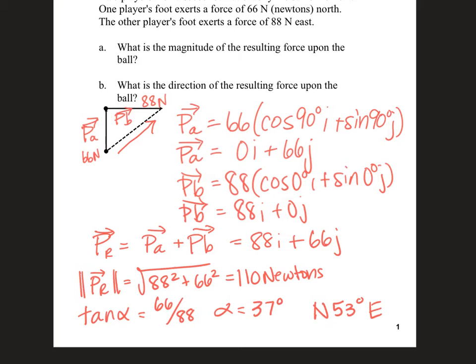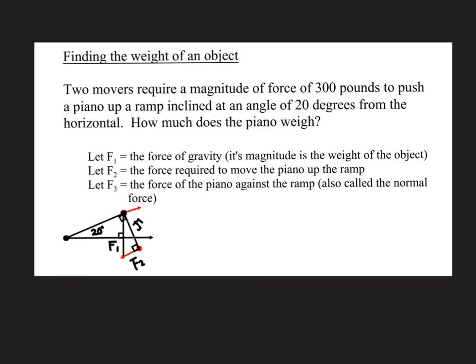Okay, now we'll get into the new information. This problem is where you're trying to find the weight of an object. Two movers require a magnitude of force of 300 pounds to push a piano up a ramp that's inclined at an angle of 20 degrees from the horizontal. So you can kind of see right here is the ramp and there's the 20 degrees. Now the question is how much does the piano weigh? The piano's weight is related to the force required to push it up the ramp and how steep the ramp is. So take a look at the three forces here.